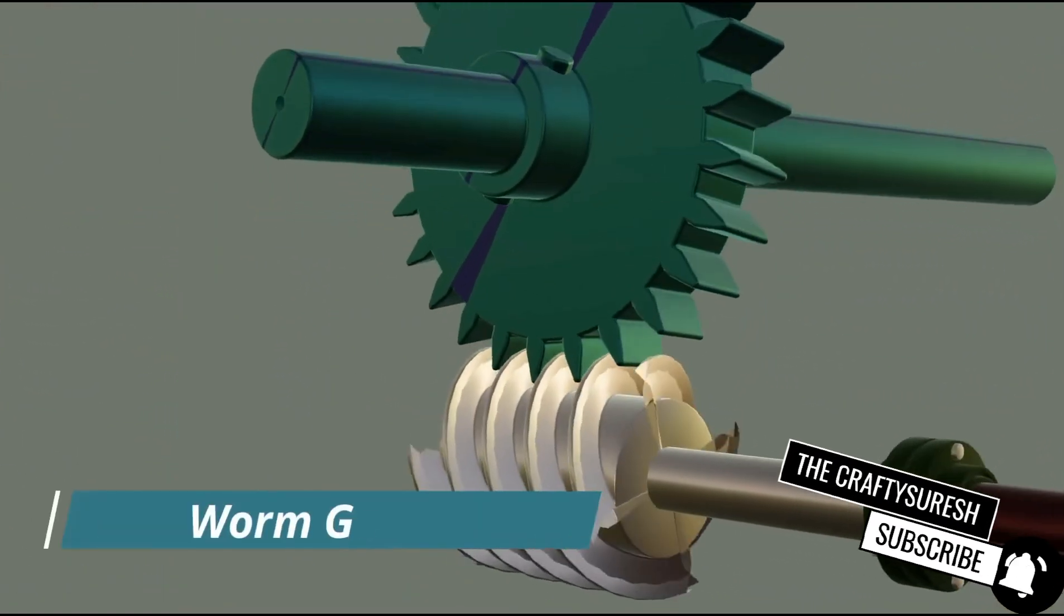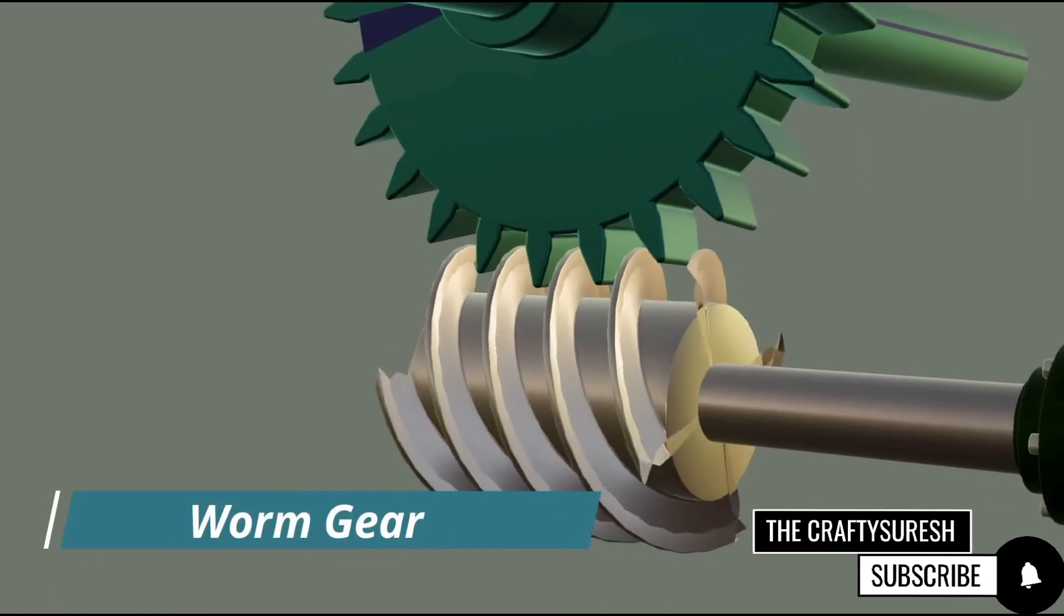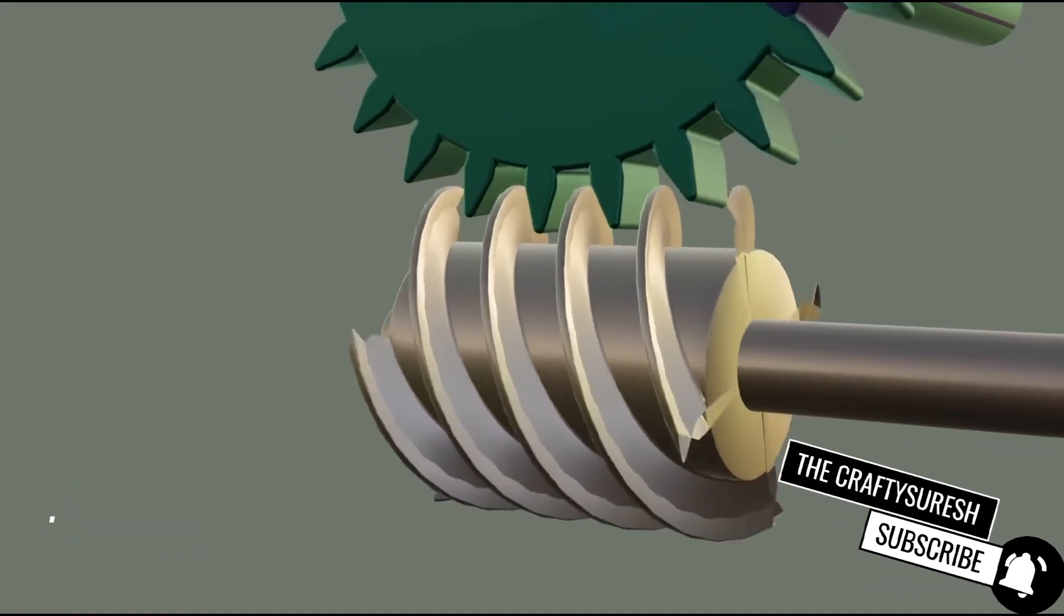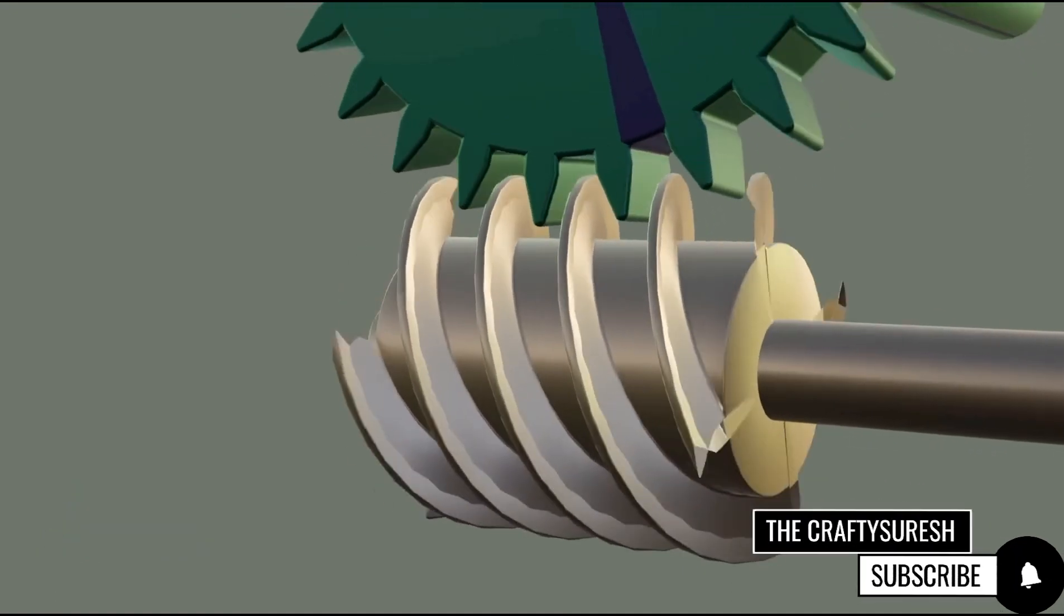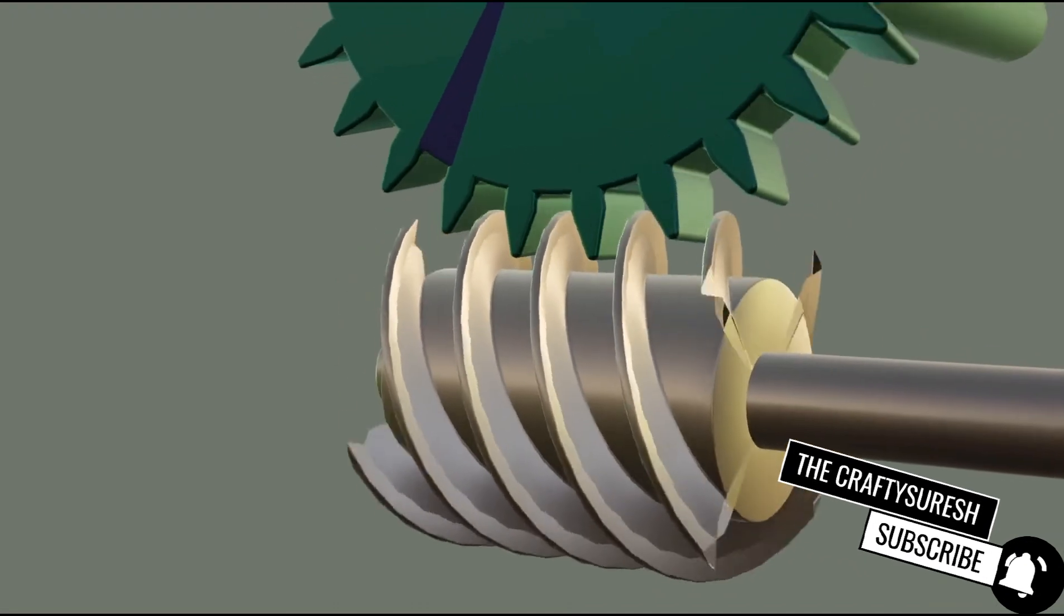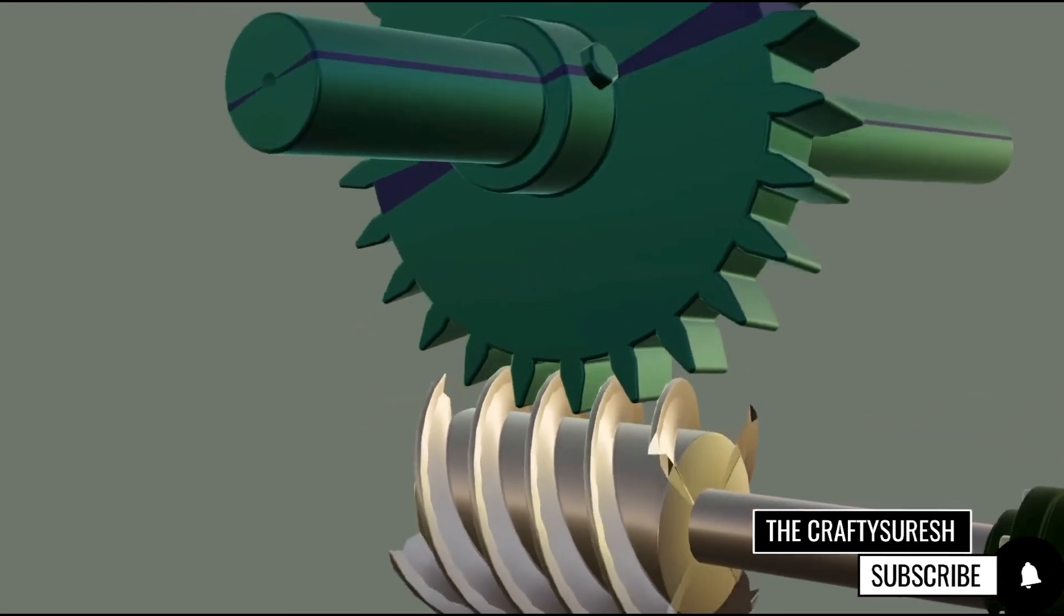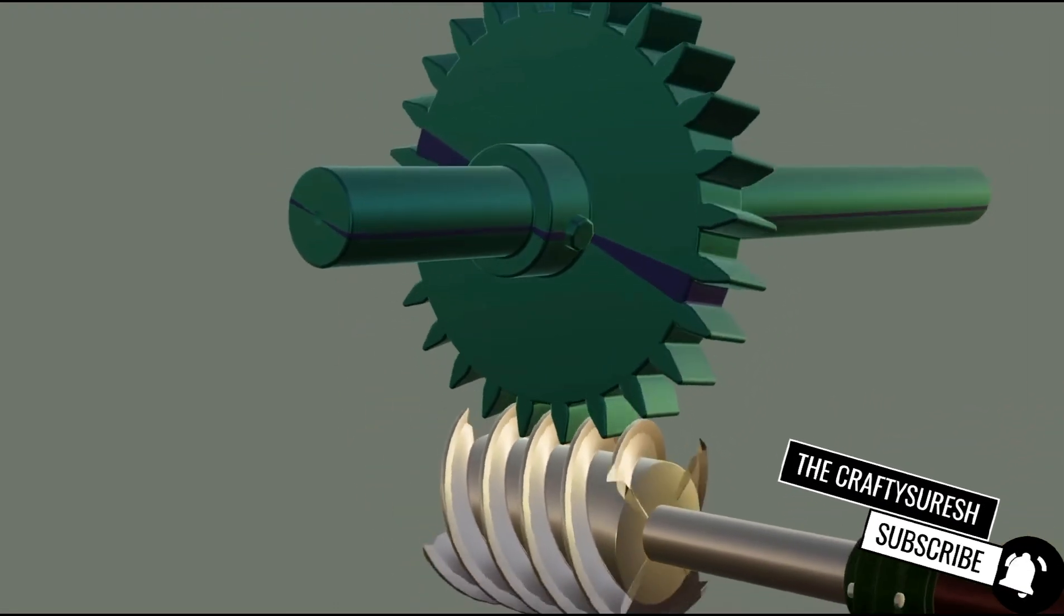After this comes the worm gear which is very important. Worm in Hindi means Kida. So it looks like a worm and rotates the gear. This gear also transmits power at 90 degrees but there is something special about it.